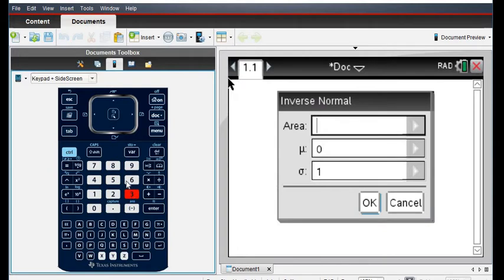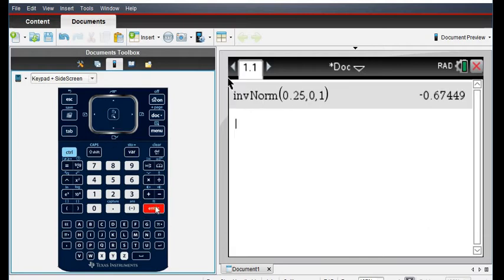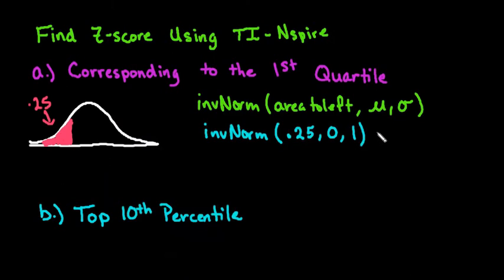Option 3 gives us our inverse normal distribution. We're going to plug in Area. In this case, because it's the first quartile, it's the 25th percentile, so we would put in 0.25 and click OK. We see that our answer is negative 0.67449.